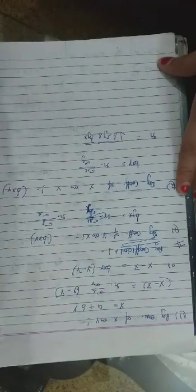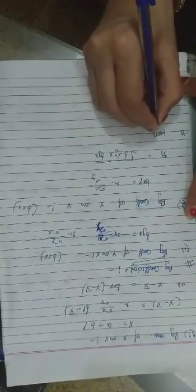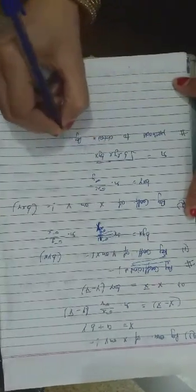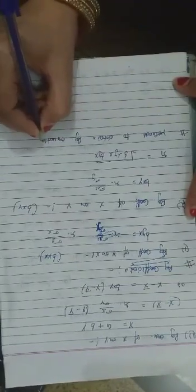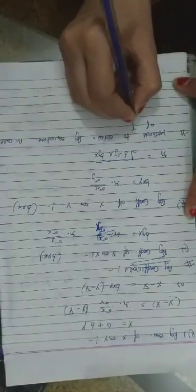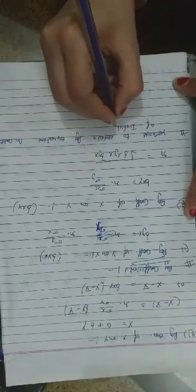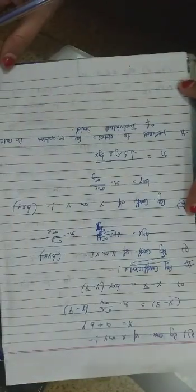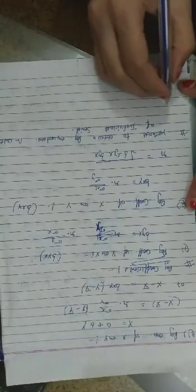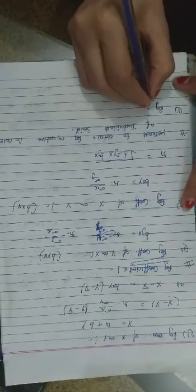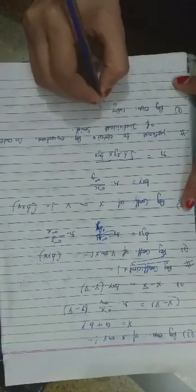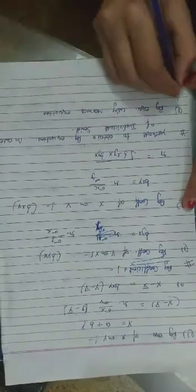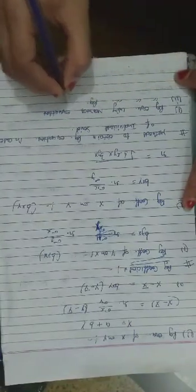Next is the method to obtain regression equations in the case of individual series. Regression equations can be worked out by two methods: first, using normal equations, and second, using regression coefficients.